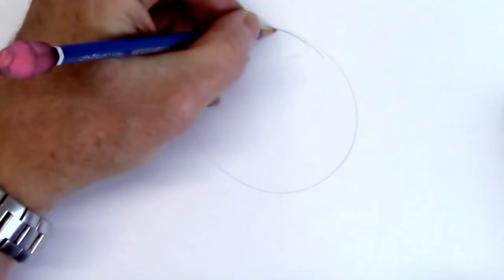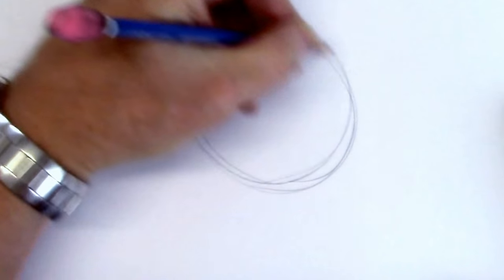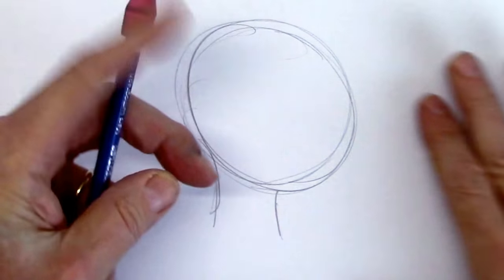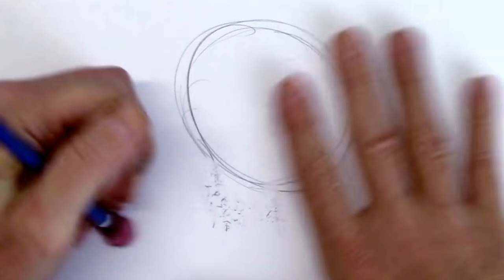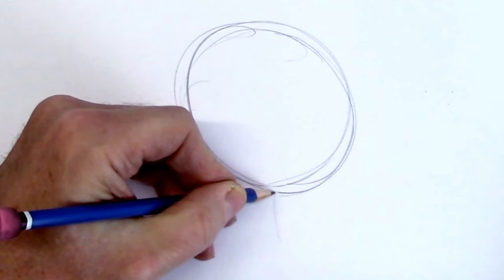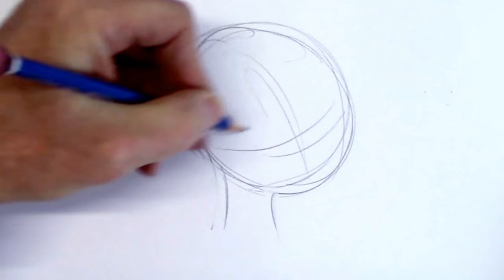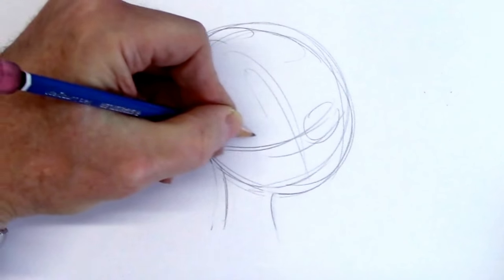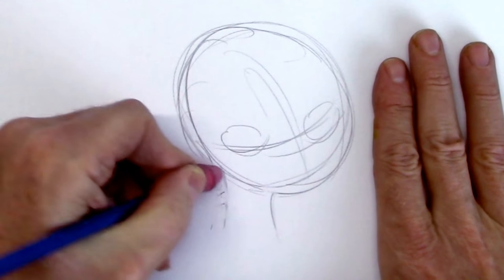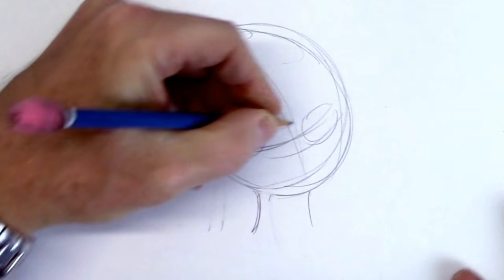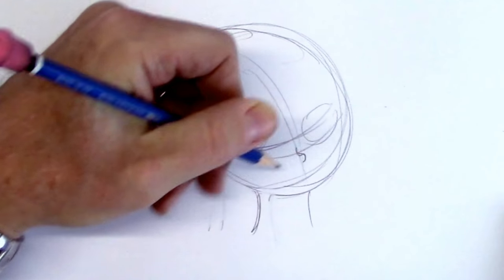So first we're going to start with a character with a very round face. Maybe we'll make him a little kid. We are going to erase, trust me. There shall be erasing. So I'll just leave the neck out for now. I think I will put it down here and we'll give him a little nose like this.